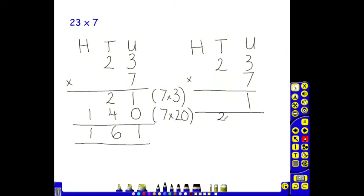Then I move to the next digit, which is the 2 tens. 7 multiplied by 2 tens is 14 tens. And because I've carried here, I need to add these 2 tens as well. So 14 tens, add these 2 tens is 16 tens. So that becomes 161.